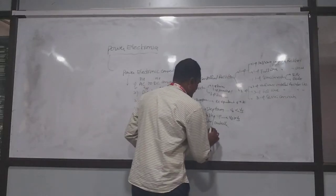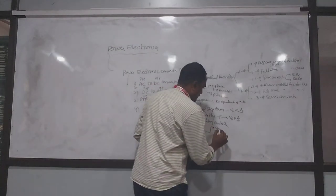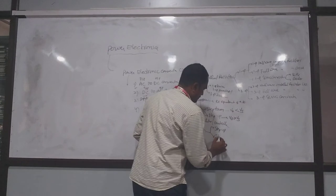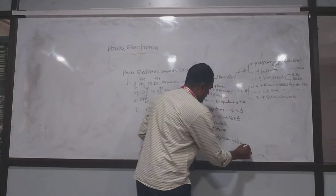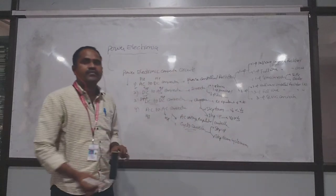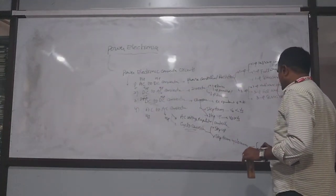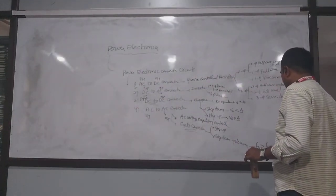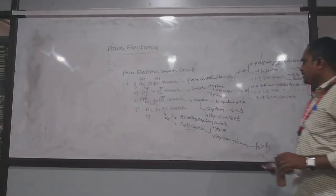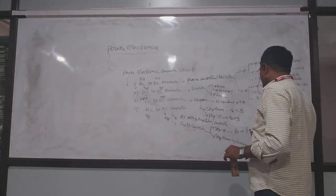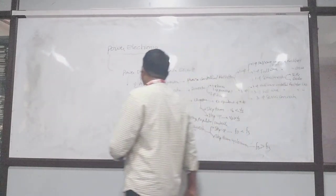The cycloconverter also has a classification similar to choppers — step-up cycloconverter and step-down cycloconverter. If the output frequency is greater than the supply frequency, it is called a step-down cycloconverter. If the output frequency is lower than the supply frequency, it is step-up. That covers all power electronic converter circuits: AC to DC, DC to AC, DC to DC, and AC to AC converter.